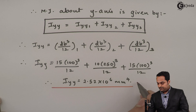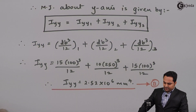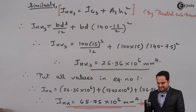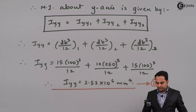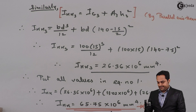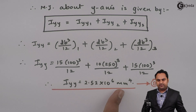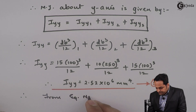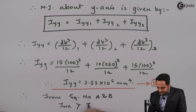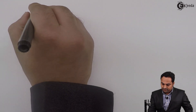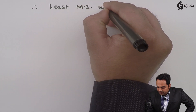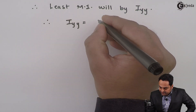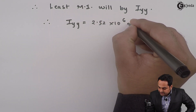To find the least MI, we compare equations A and B. Ixx is 65.75 × 10⁶ mm⁴ and Iyy is 2.52 × 10⁶ mm⁴. Since Ixx is greater than Iyy, the least MI is Iyy, that is moment of inertia about the y-axis. Therefore, the least MI is Iyy = 2.52 × 10⁶ mm⁴.